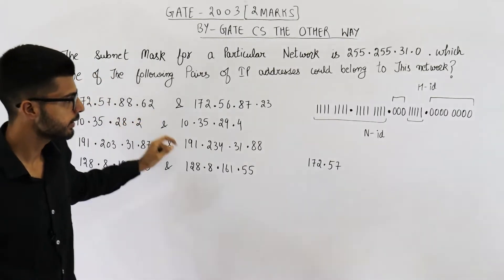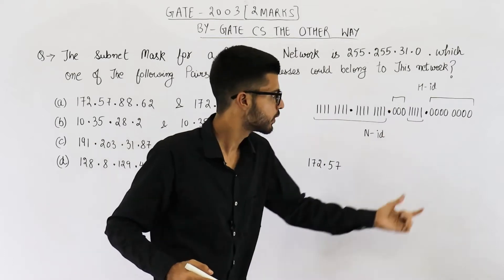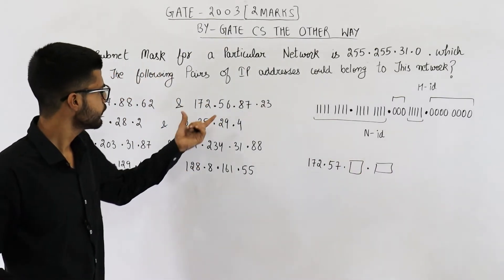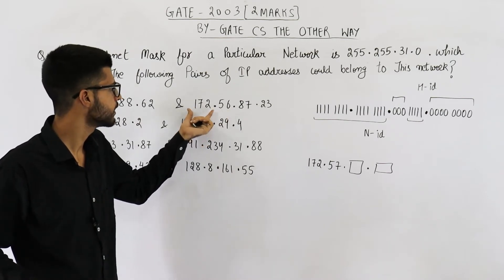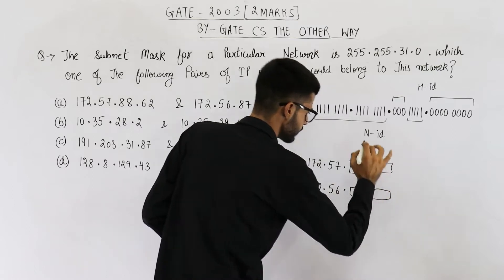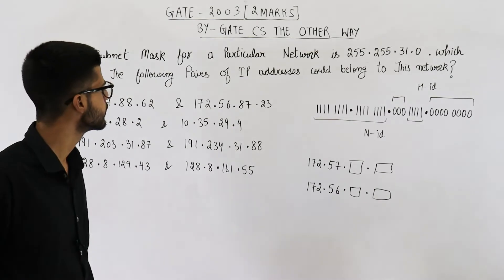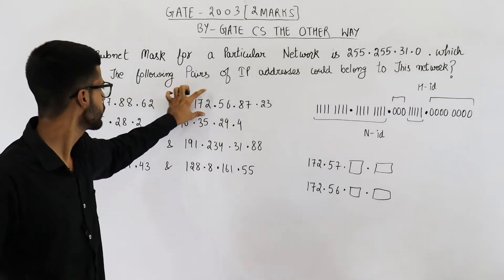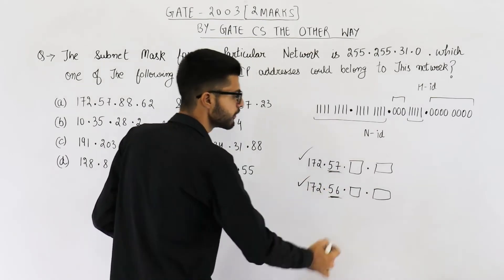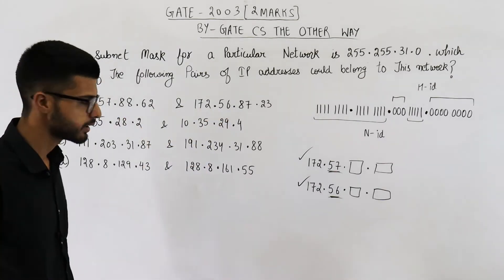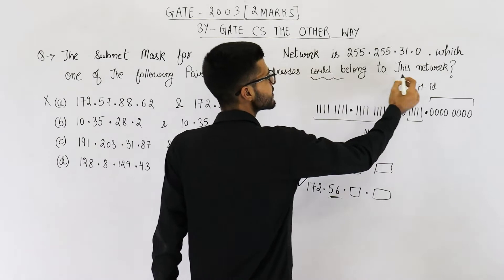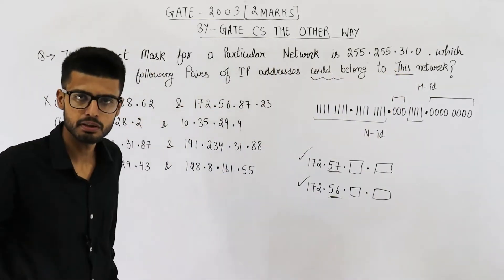Then we have 88.62 — 88 has to be ANDed with the third octet of the mask, and 62 with the last octet. You will get something dot some number. For the second IP address in option A, if you find the network ID, you will see it will be 172.56.something. The thing is, this IP address belongs to a different network from the first one. The network IDs are different — here we have 57, here we have 56. That means option A cannot be the answer, because they're asking which pair could belong to the same network.